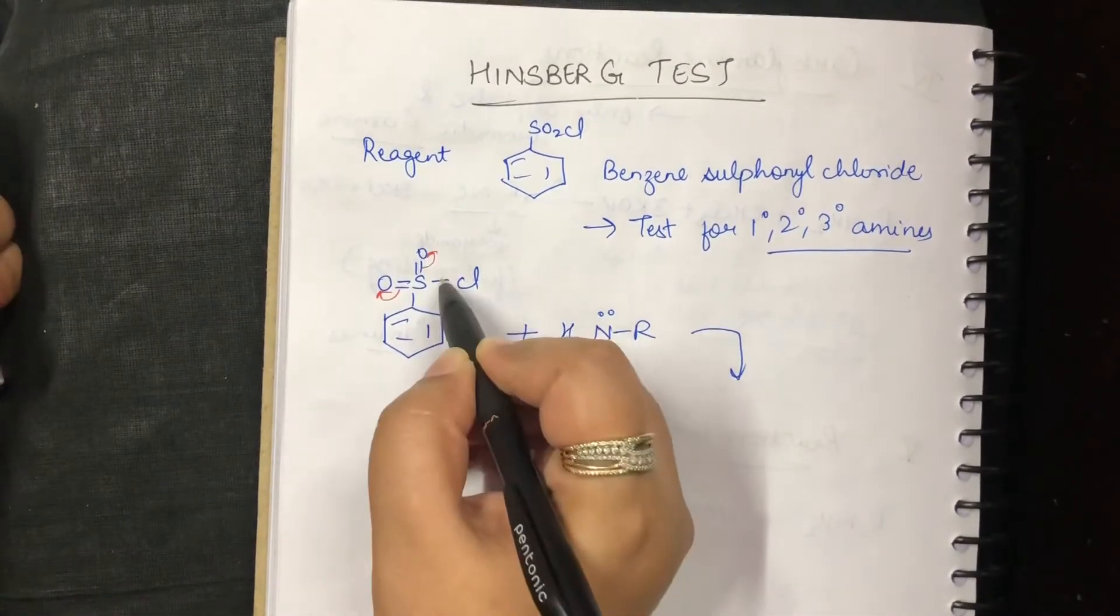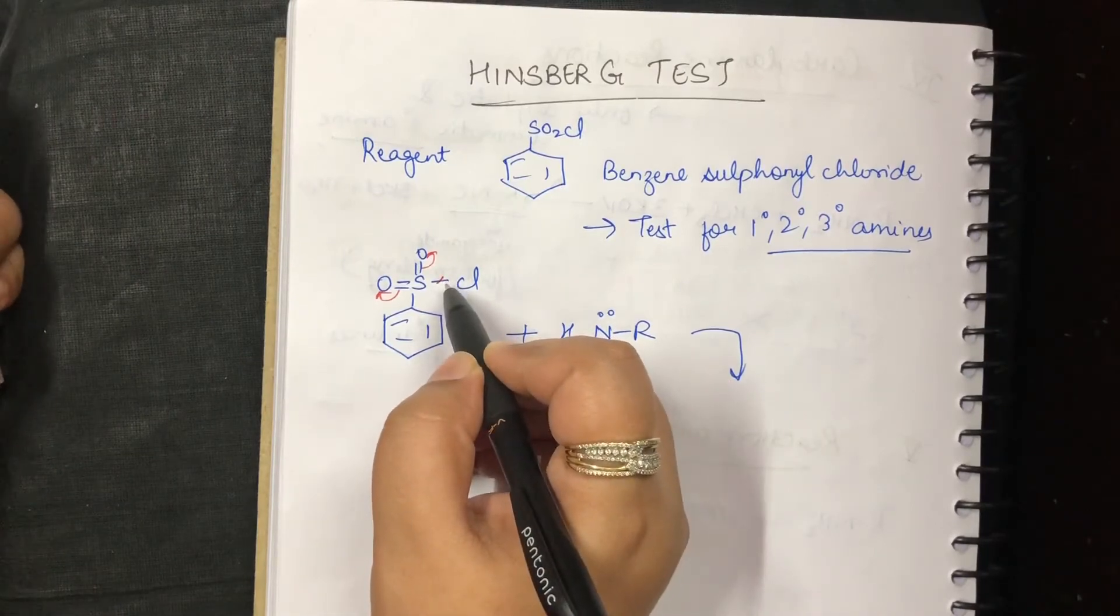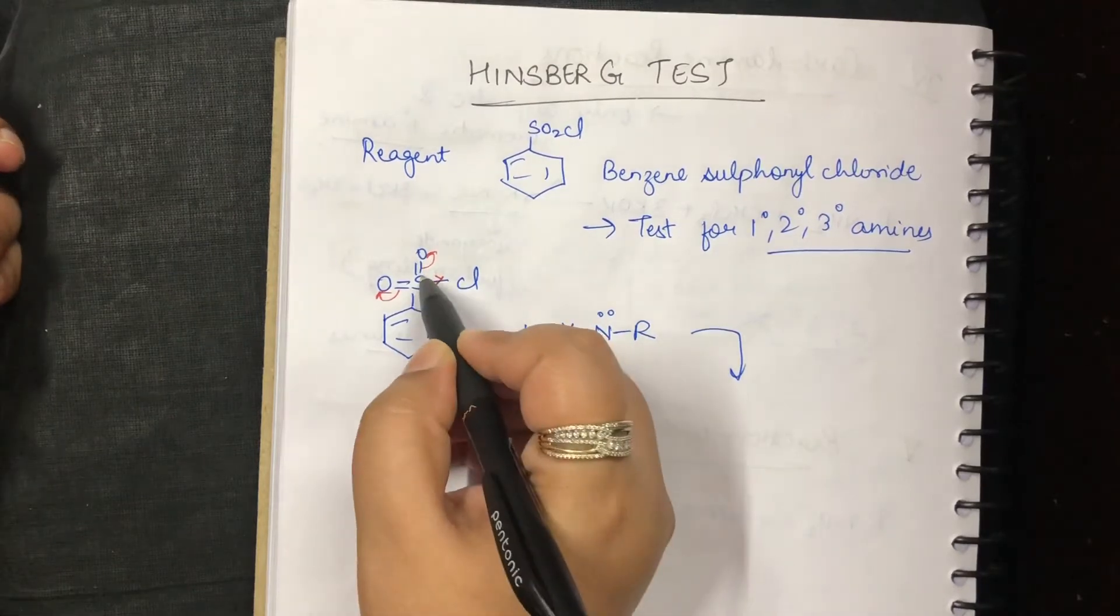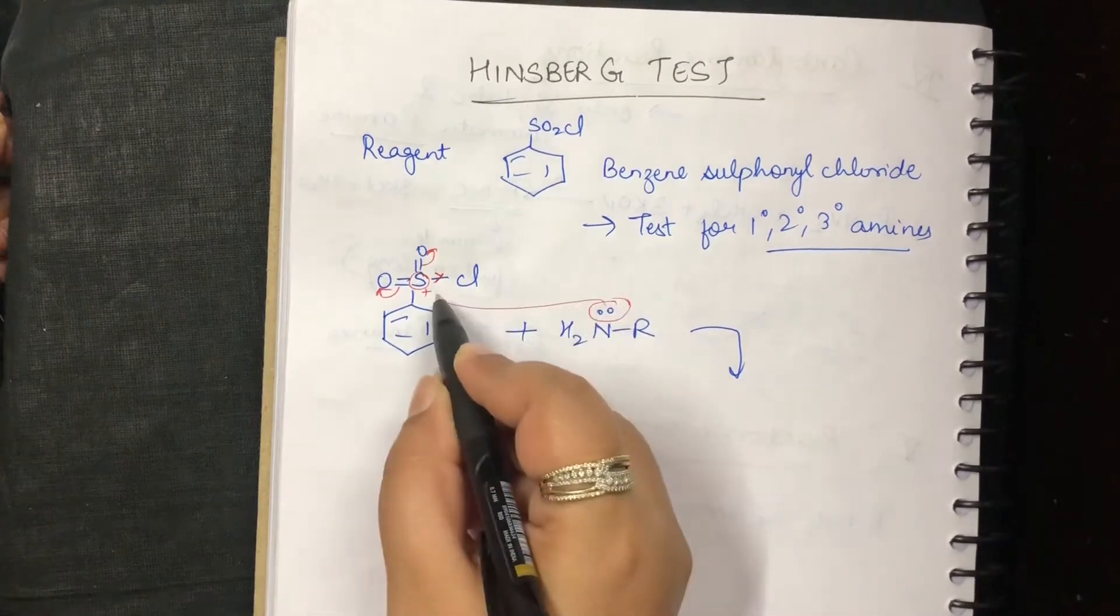We all know that this bond will shift here because oxygen is more electronegative. This also will shift here. Chlorine is also electron withdrawing. So, chlorine will pull up the electrons towards itself leaving this sulfur positive. Now this lone pair will go and attack here.